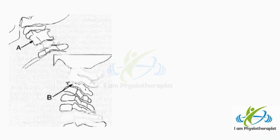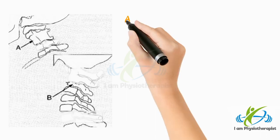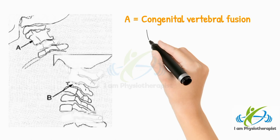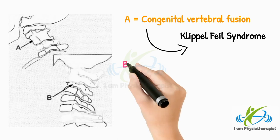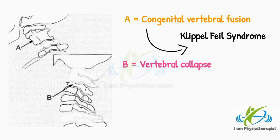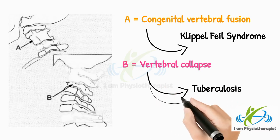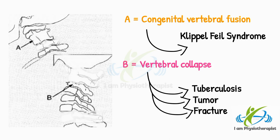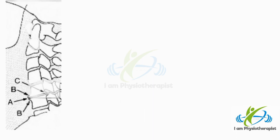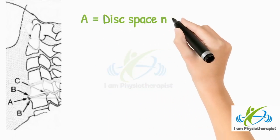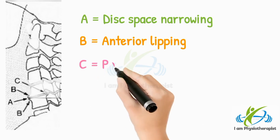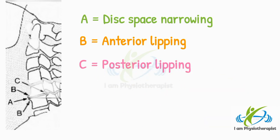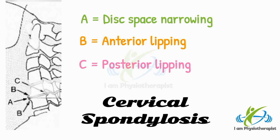In the cervical X-ray, note the general shapes of the vertebral bodies. Point A shows congenital vertebral fusion, such as occurs in Klippel-Feil syndrome. Point B shows vertebral collapse, which may be due to tuberculosis, tumor, or fracture. Look at the disc spaces and related margins of the vertebrae. Point A shows disc space narrowing; Point B shows anterior lipping; Point C shows posterior lipping. These are all features of cervical spondylosis.